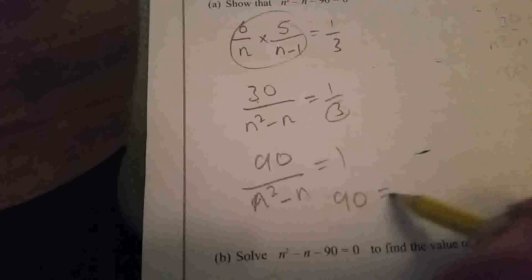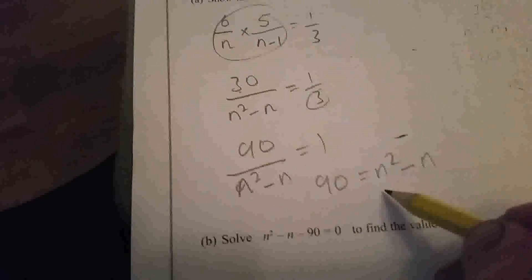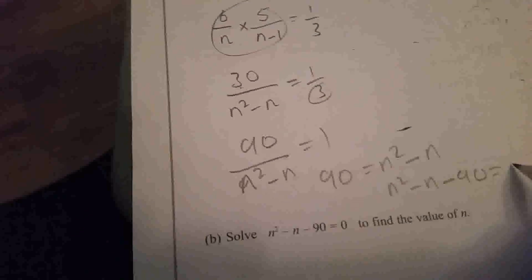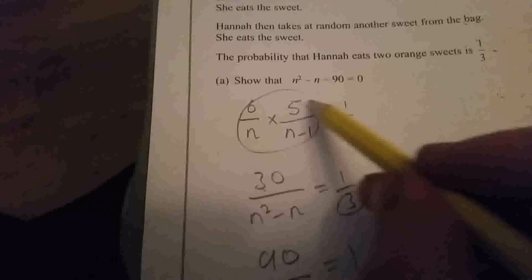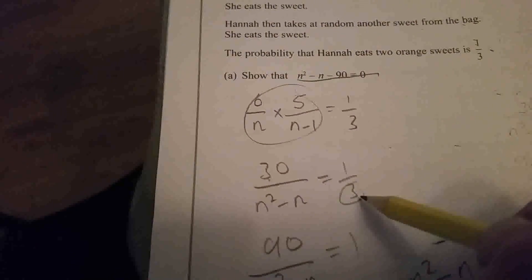So therefore 90 = n² - n. So n² - n - 90 = 0, which is what we needed to show. Which is a bit easy.